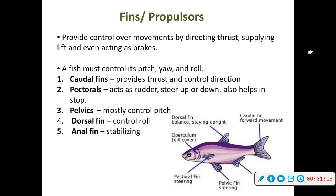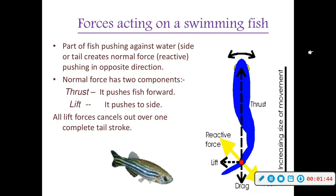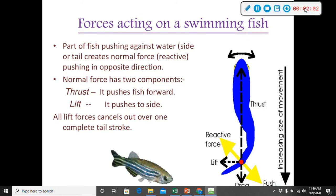Your anal fin is going to help in stabilization. A fish swims by contracting and relaxing complex networks of muscles along the sides of its body known as myomeres — you have myomeres too, that's how your muscles contract. This creates a series of waves traveling down the fish's body; the rear part of each wave thrusts against the water and propels the fish forward. The part of the fish pushing against water — side or tail — creates a normal force or reactive force pushing in the opposite direction.